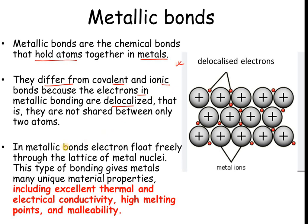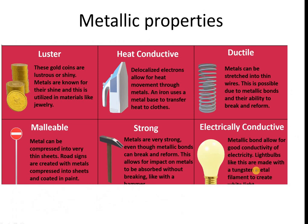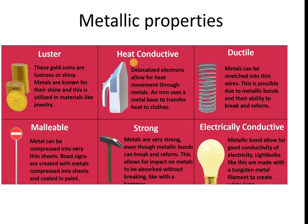In metallic bonding, electrons float freely through the lattice of metal nuclei. This unique bonding explains all the properties we observe in metals: thermal conductivity, electrical conductivity, high melting and boiling points, and malleability. Metals also have a lustrous, shiny appearance, and they are good conductors of heat and electricity because of their delocalized electrons which can move freely throughout the metal.